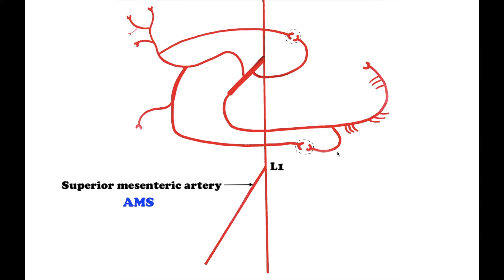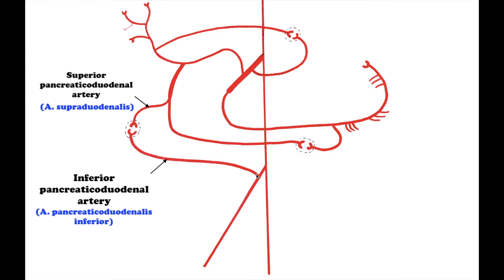The next unpaired visceral branch is the superior mesenteric artery, arteria mesenterica superior, which arises from the anterior surface of the aorta directly below the celiac artery. Its branches include the inferior pancreaticoduodenal artery, which passes to the right on the concave surface of the duodenum to meet the superior pancreaticoduodenal artery from the gastroduodenal artery.